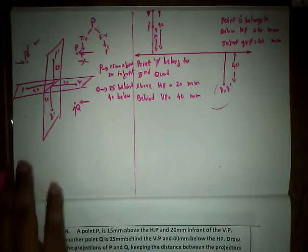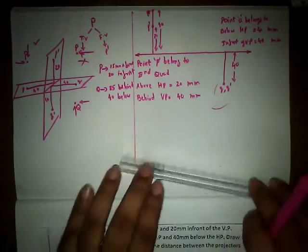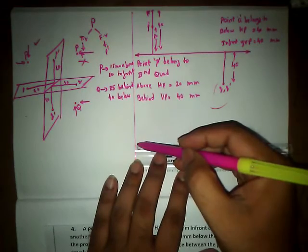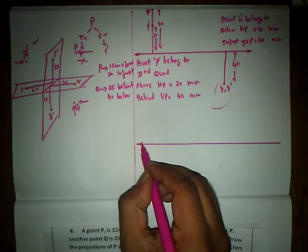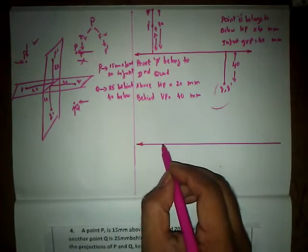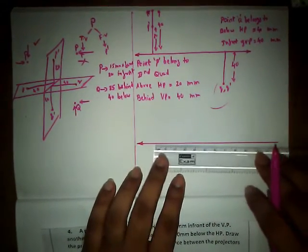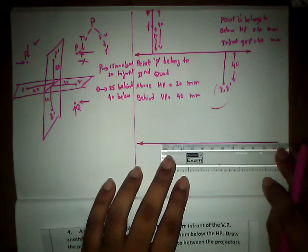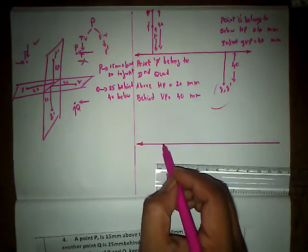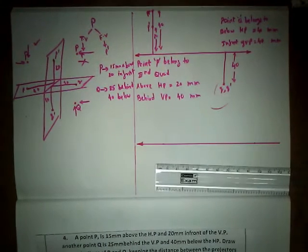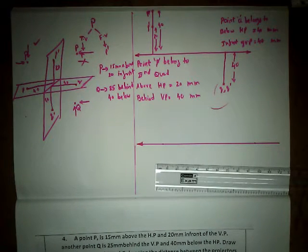Let us draw a line and consider this as our XY reference line. I'm going to draw the first projector here, and the projector-to-projector distance is going to be 90mm. So we draw the first projector here and the second projector here.